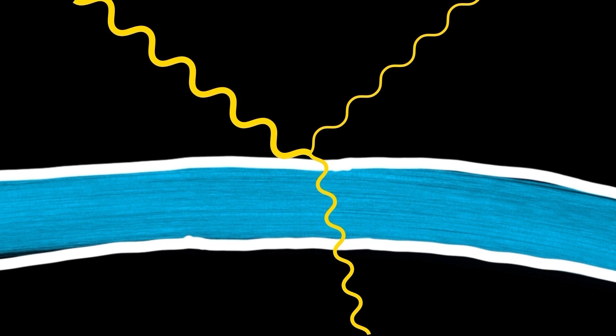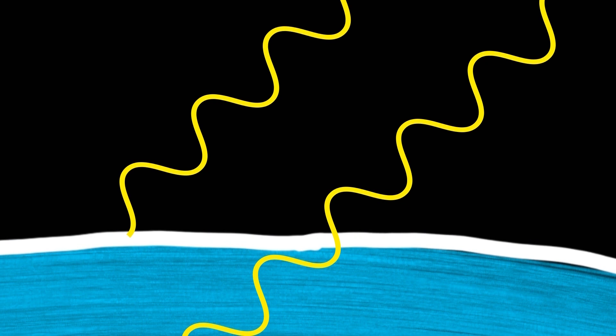Sometimes the ray of light that goes through will get reflected off the second surface. Waves have this property where they can interfere with each other.